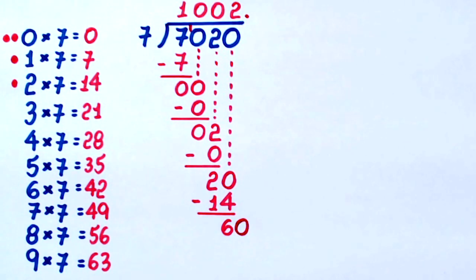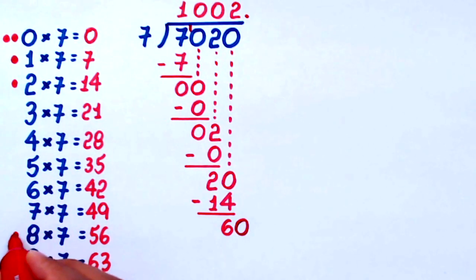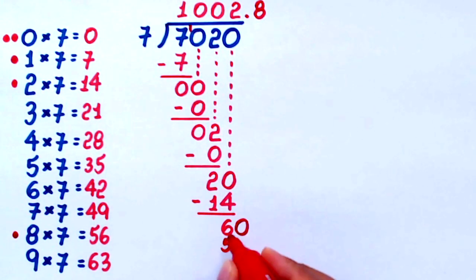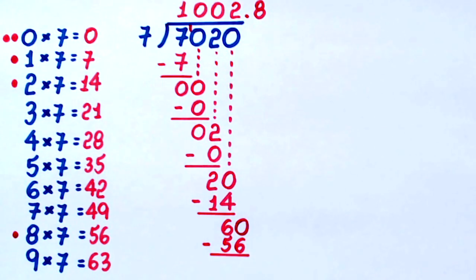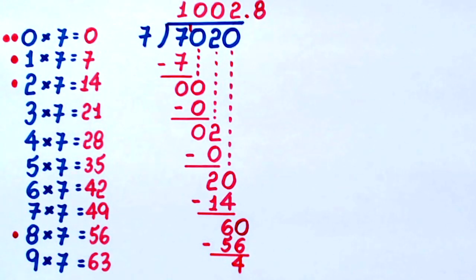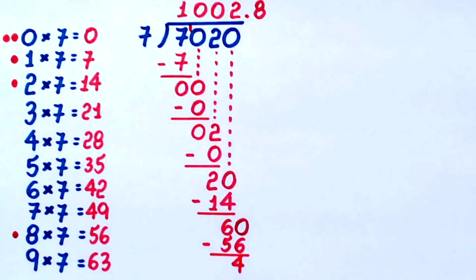We continue asking: how many times does 7 go into 60 without going over? 9 times 7 is too much because it is 63. So the number we were looking for is 8. Since 8 times 7 equals 56, that's what I write here, and now I subtract: 60 minus 56 equals 4. After the subtraction, we bring down the next digit. Since we have already used the decimal point and there are no visible digits, we continue by bringing down 0, giving us 40.